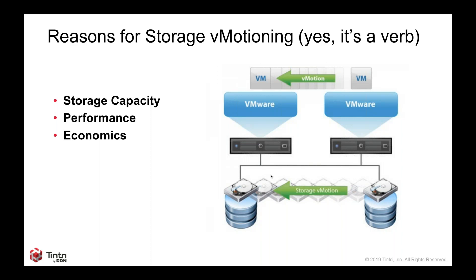We end up tiering between these to achieve an economic balance. Economics also applies to older hardware — at some point, your hardware isn't worth the power and cooling for the value it gives you, and you've got maintenance agreements on it. Security might be one more reason: if you have encryption on a certain storage device that's not on another, you'd want to move those workloads over so they can take advantage of that encryption.